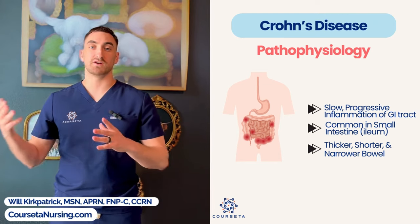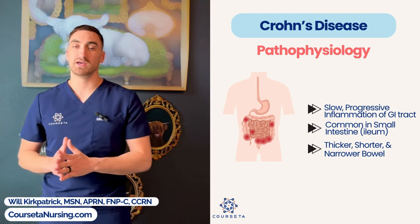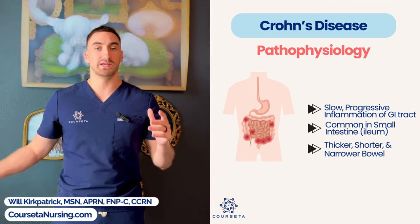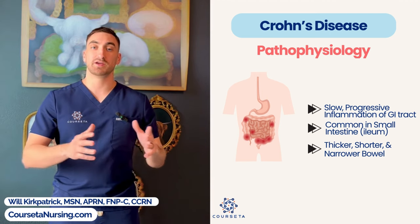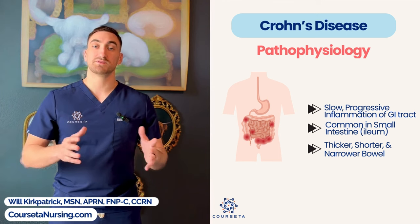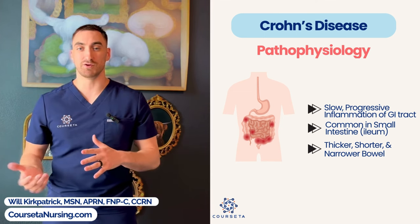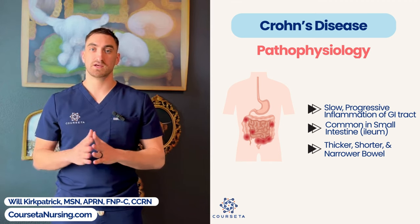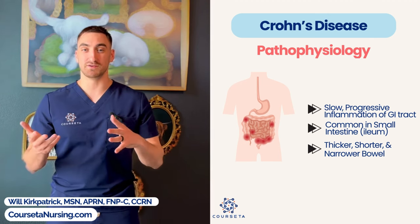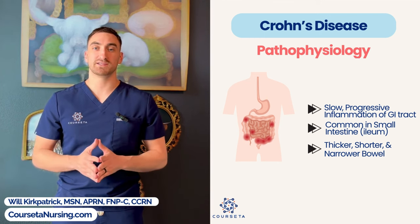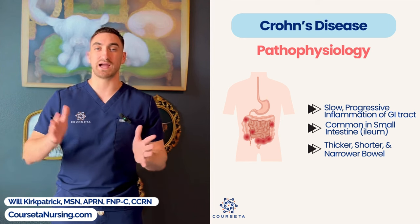Crohn's disease is also an inflammatory bowel disease, but unlike ulcerative colitis it doesn't just affect the large intestine — it can affect any part of the GI system, from the mouth to the anus. Most commonly it affects the small intestine, specifically the ileum, and can travel into the ascending colon. Unlike ulcerative colitis, Crohn's disease is a slow, chronic, and progressive disease — the inflammation doesn't wax and wane in the same way; it progressively gets worse.